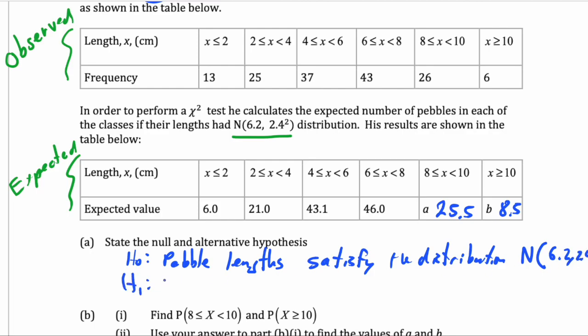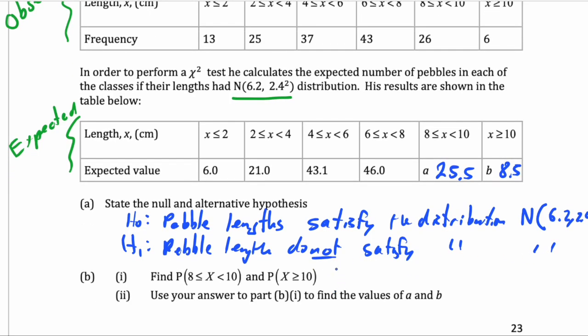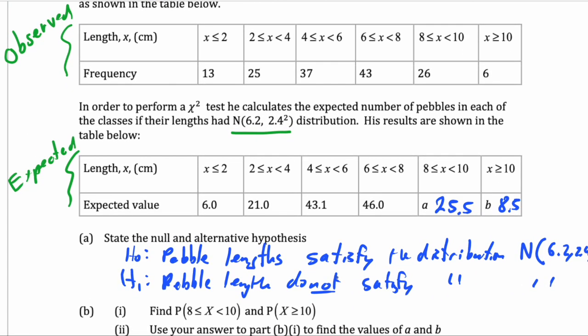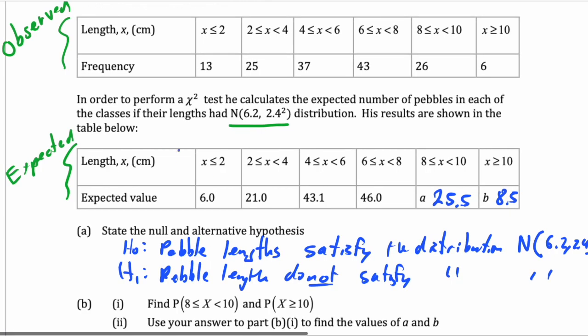And H1 is the opposite: pebble lengths do not satisfy the same distribution. And now let's do the test and come to the conclusion.